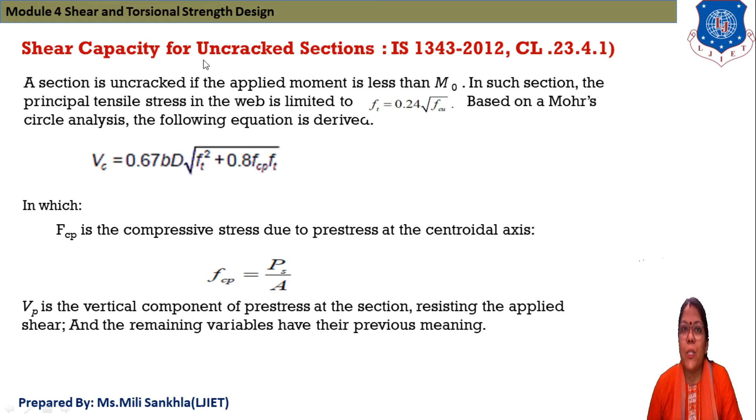We find out shear capacity of uncracked section and this is given in clause number 23.4.1 in IS 1343-2012. A section is uncracked if applied moment is less than MO. In such section, the principal tensile stress in web is limited to FT is equal to 0.24 under root FCU and this FCU is equal to FCK.